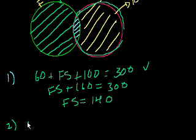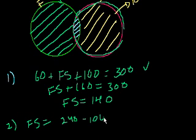So French and Spanish equals the whole amount that study Spanish, which they just told us is 240, minus just the people who study only Spanish. So 240 minus the people who just study Spanish, that's 100, that also equals 140.